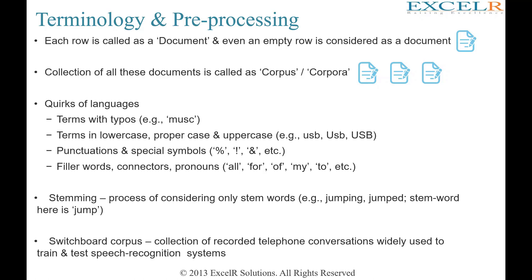If 300 people filled forms, selected yes/no values but left the explanation blank, each is still a document. The collection of these documents is called a corpus or corpora. There are some quirks in language that we must train our system to handle: upper and lower case representation of the same word, punctuation marks, filler words, and stemming — 'jumping,' 'jumped,' 'jump' all belong to the same stem, just as we saw with 'players' and 'plays.' These quirks need to be addressed in pre-processing.